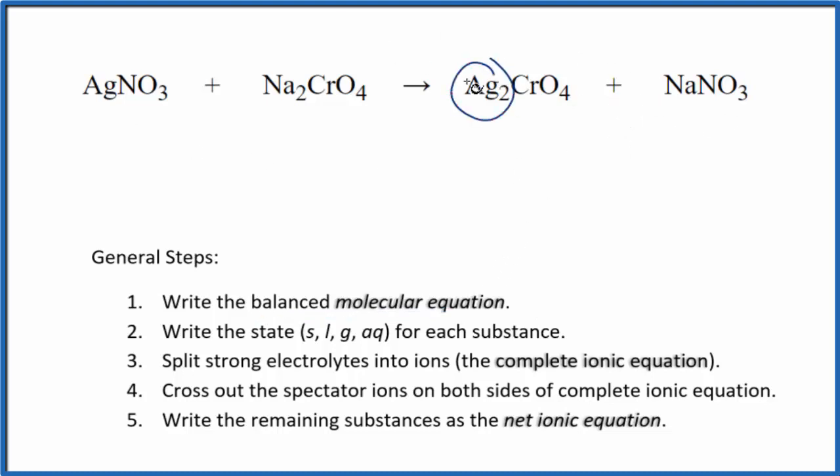So I have two silver atoms here and just one here. Let's put a two in front of this silver nitrate. Balances the silver, but now I have two nitrates here and only one here. So I'm going to put a two in front of the sodium nitrate. That gives me two sodiums. Those are balanced, two nitrates. And then I have this chromate here and another chromate ion there. So everything's balanced.